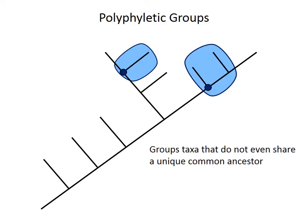The third type of grouping is called polyphyletic. A polyphyletic group incorporates taxa that don't share a unique common ancestor. For example, the three taxa highlighted in blue here are polyphyletic because they derive from two separate common ancestors — the two blue circles at the nodes — with other taxa branching between them.